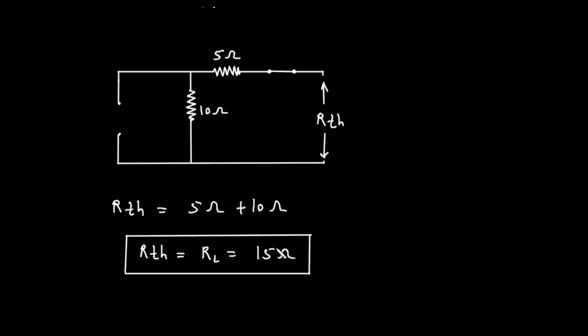Now we have the Thevenin resistance. Let's go back to the maximum power transfer theorem. The theorem told us that for maximum power to be delivered to the load, the load resistance R sub L must be equal to the Thevenin resistance R sub TH. Since we have calculated R sub TH to be 15 ohms, the value of R sub L must also be 15 ohms.